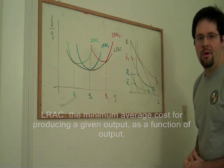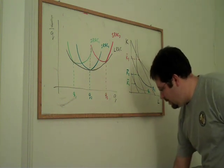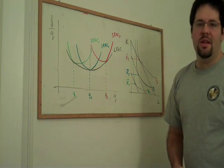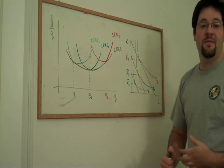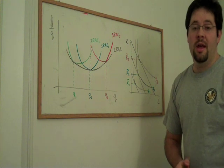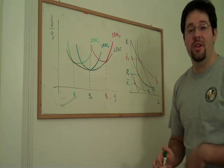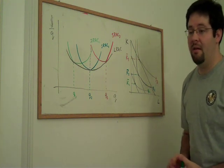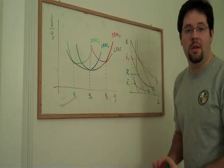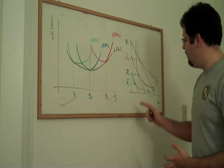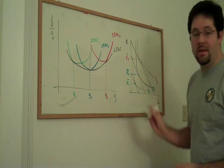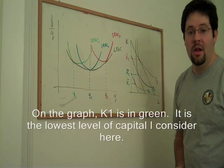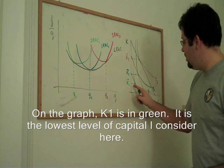But where does the short run average cost curve come from? Well the thing is that in the short run what we typically think of as capital is fixed at some level and it takes some time to actually adjust the number of machines that we have employed in the production process. So for example, we might be stuck with K1 units of capital in the short run.